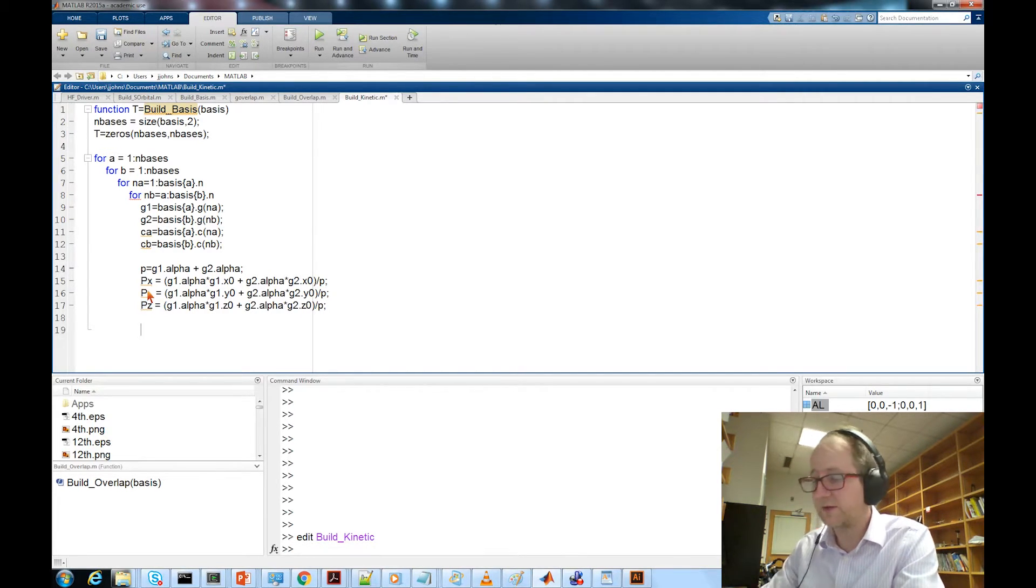Now I can start filling in numbers. Matrix element t a, b equals t a, b plus—this is the overlap of the original function multiplied by 3 alpha. So 3 times g2 dot alpha times g overlap g1, g2.